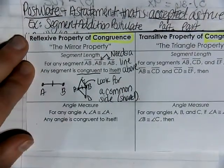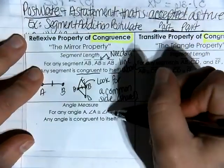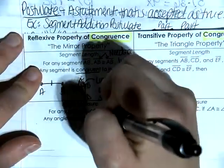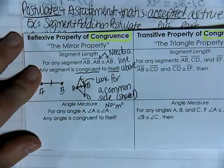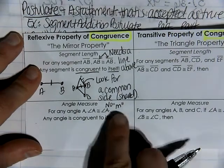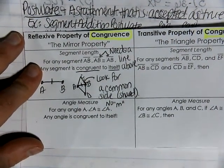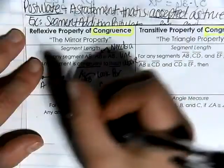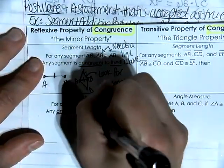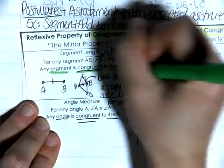The reflexive property of congruence also says that for any angle A, angle A is congruent to angle A. Notice there is no M in front — no M means we are not measuring the actual degree of the angle. We're just talking about the relationship that the angle has with itself. Any angle is congruent to itself, and any segment is congruent to itself.